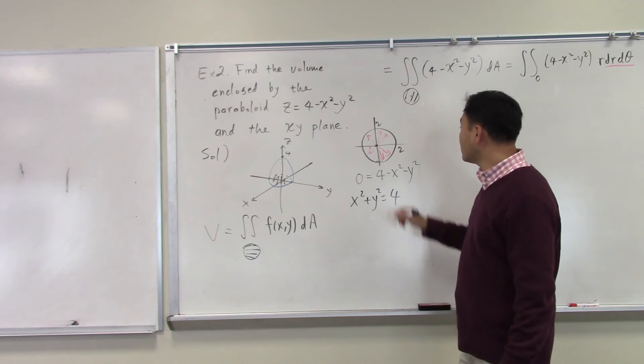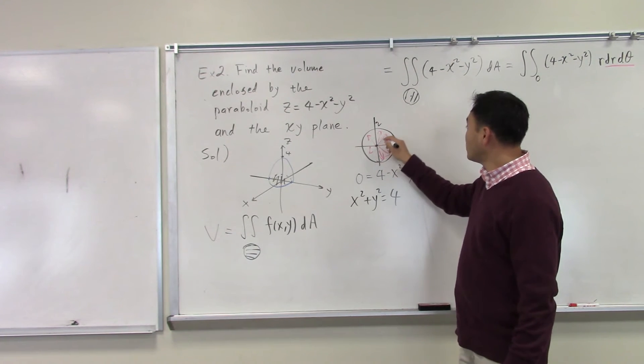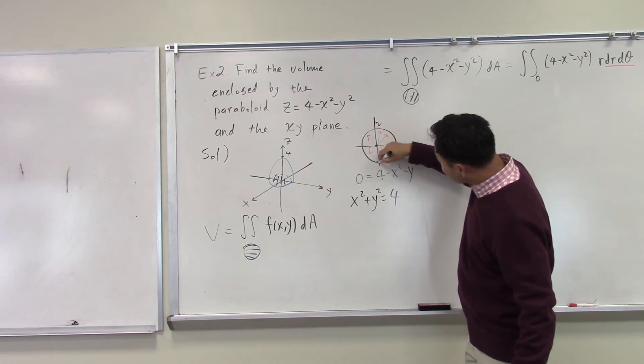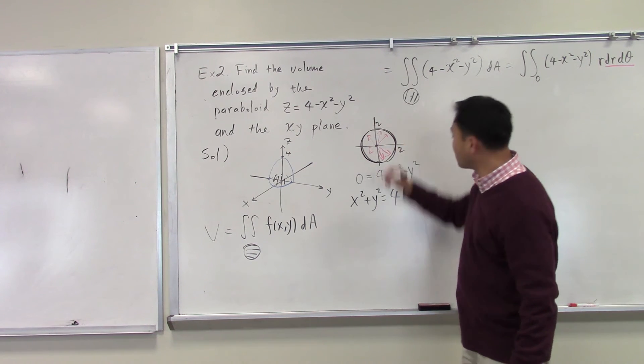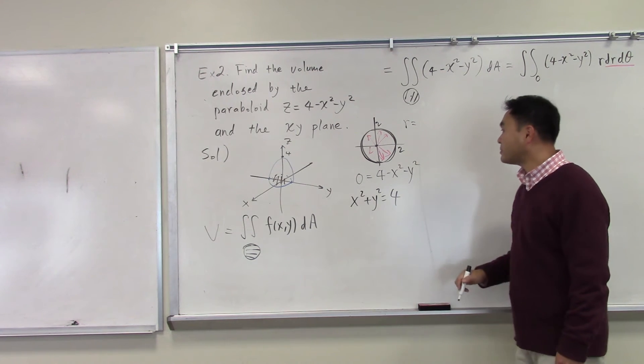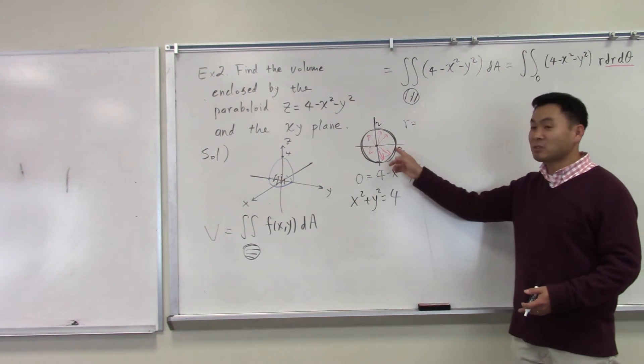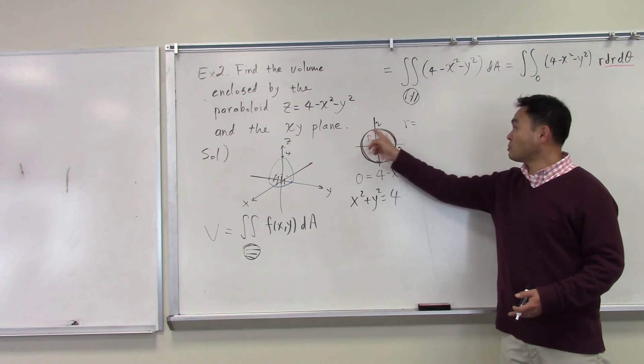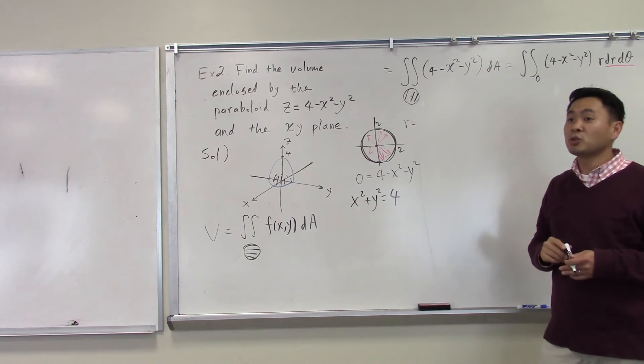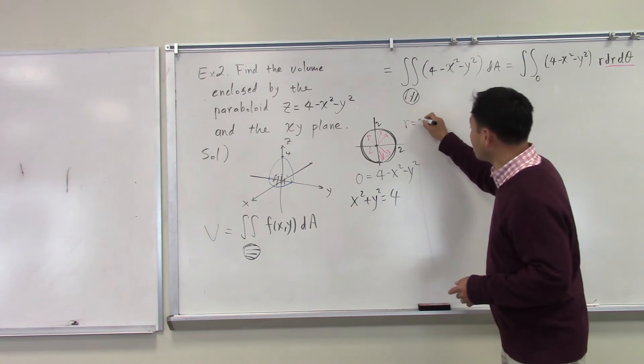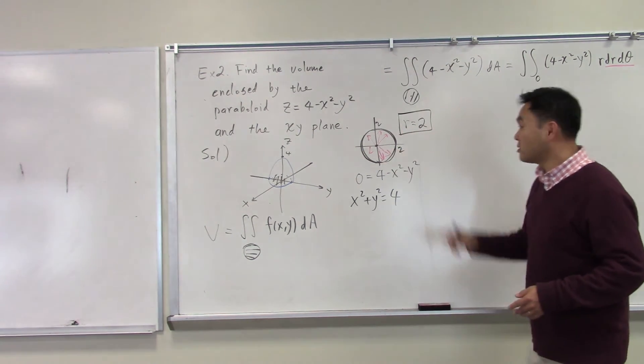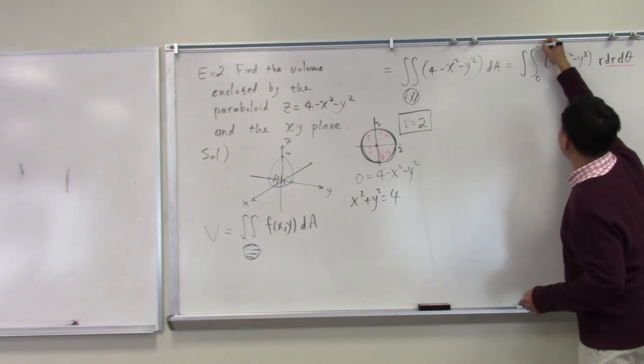And then if you stop at some curve, you have to be able to express this curve using R equals some function of theta. But this time it's easy because what are these points? These are a collection of points where R value is 2. So R equals 2 perfectly describes this circle outside, so that's why I want to put a 2 there.